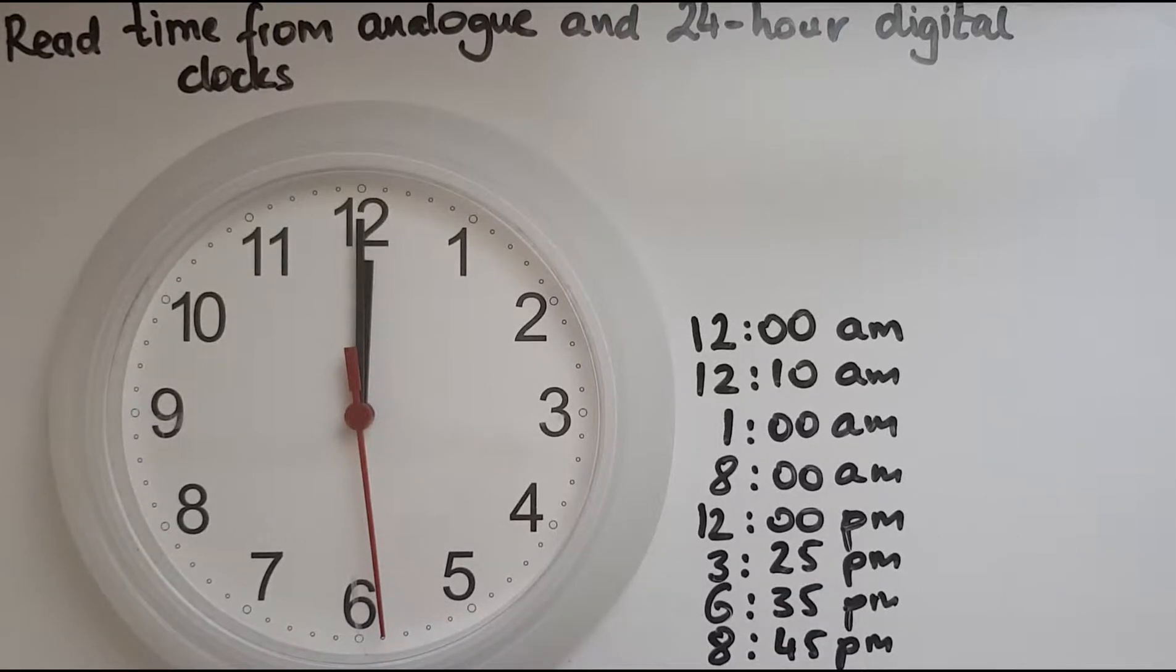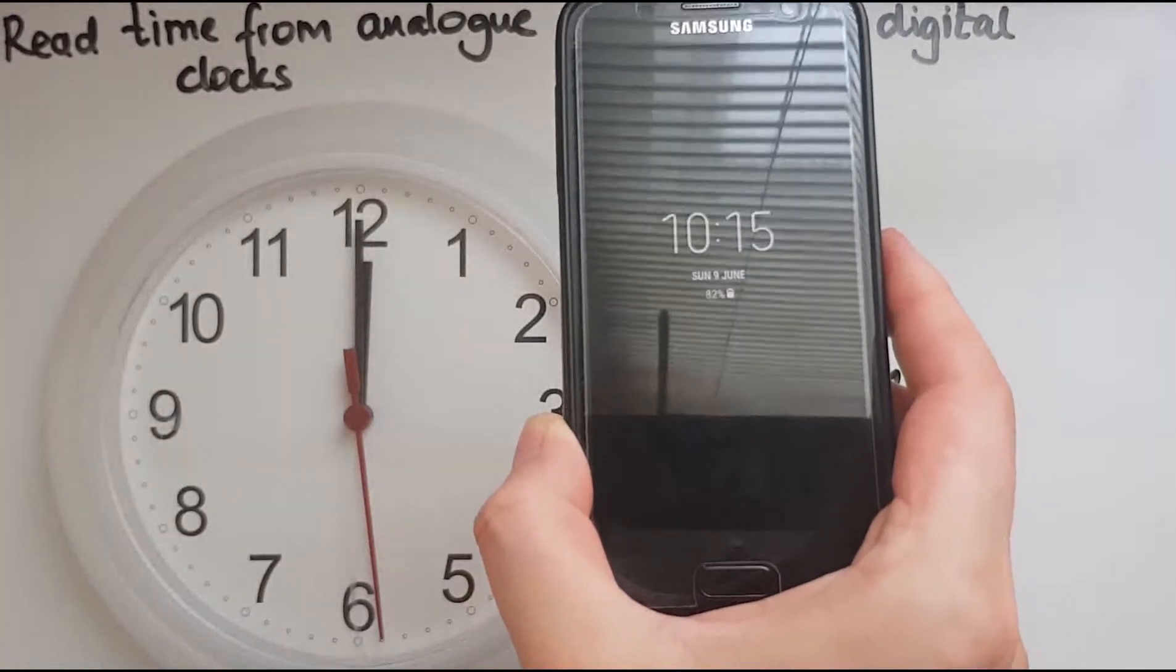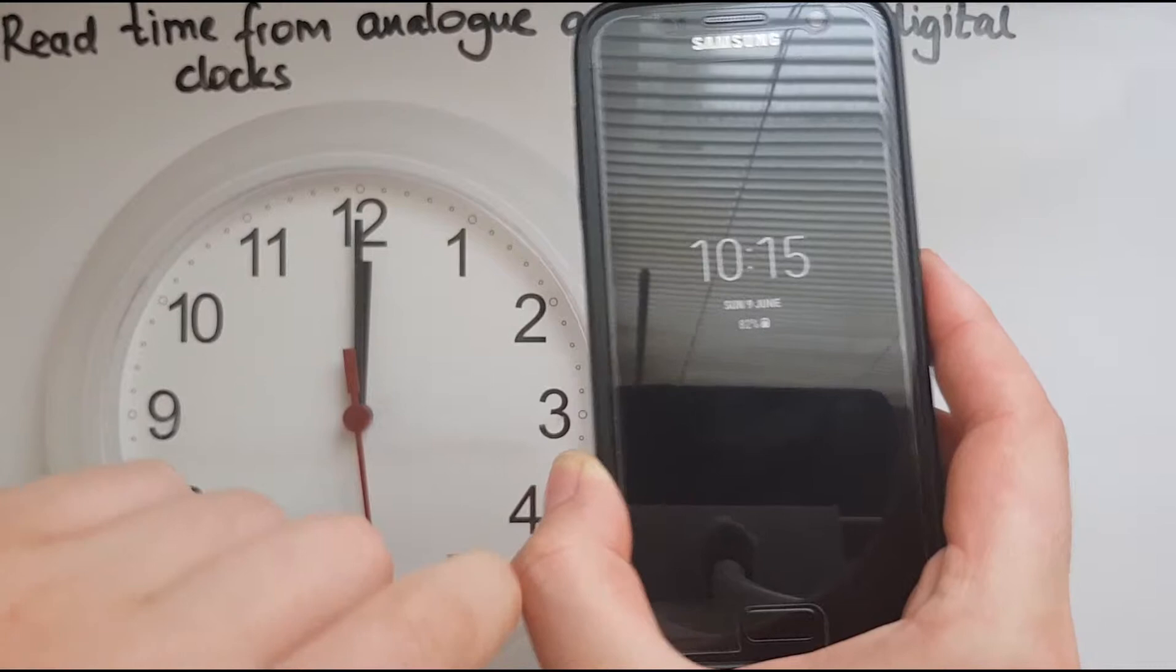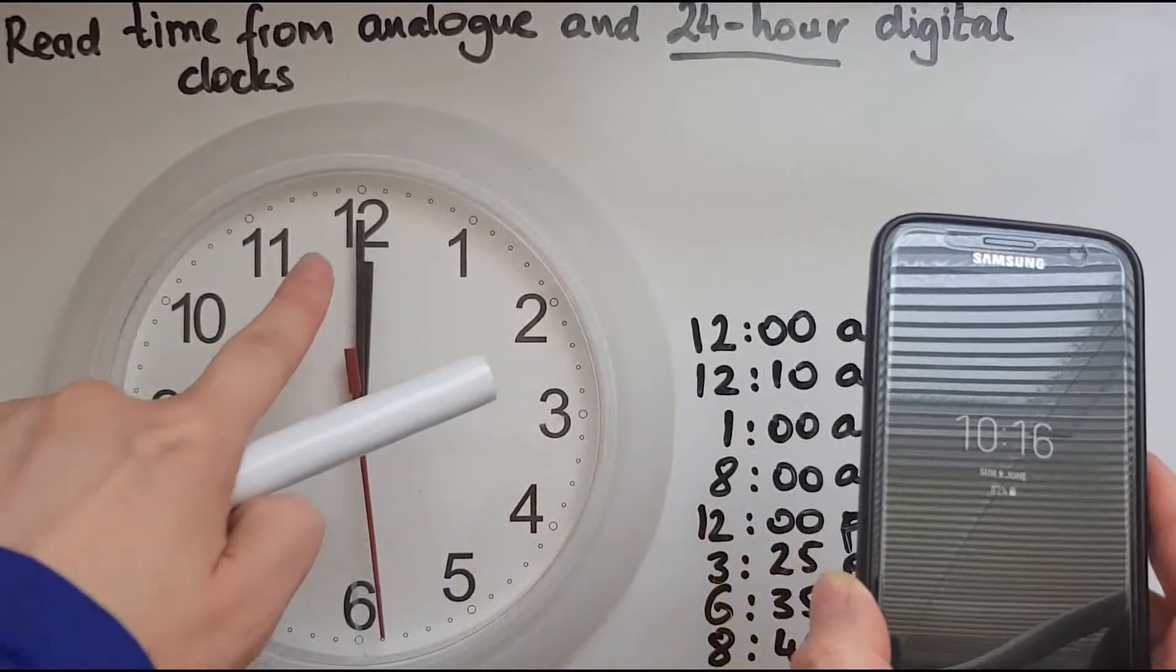In this video we'll learn to read time from analog and 24-hour digital clocks. We know that digital clocks show time in digits, not like the analog clocks.